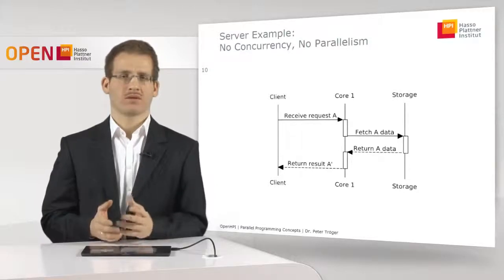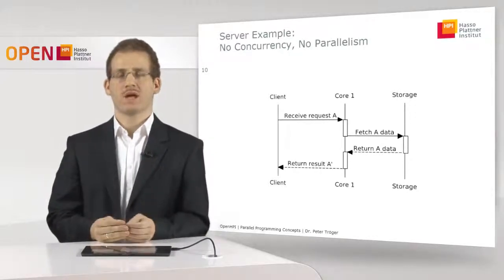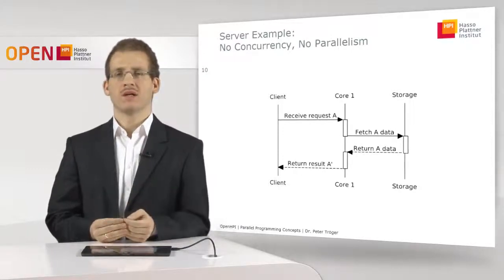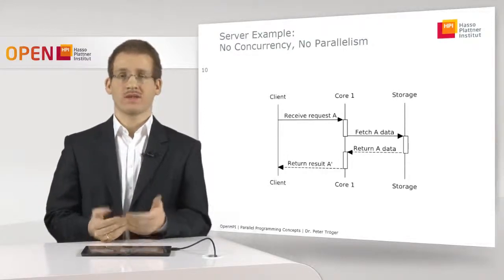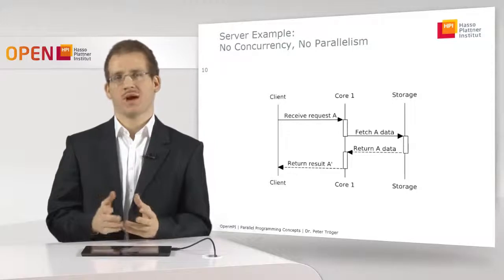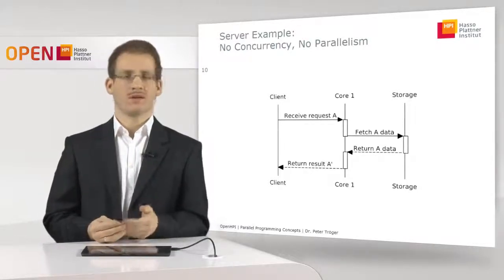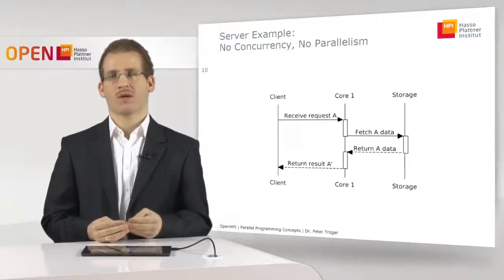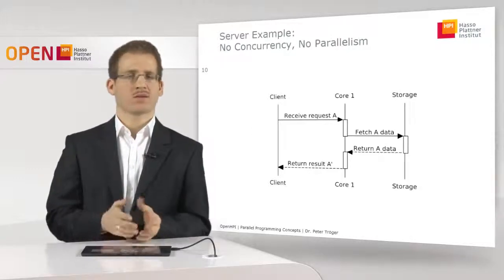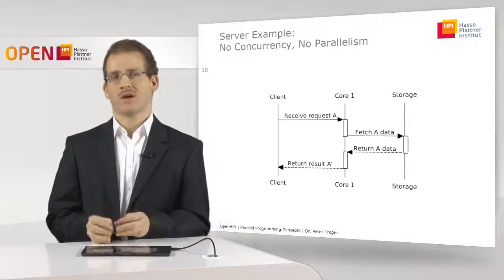Let's take a simple example to strengthen this understanding: a server system. We have a server computer with one or multiple cores and some storage, and clients sending requests to the server. The first example is the case without concurrency and without parallelism. The client sends a request A, which is received by one of the cores. The server performs some computation — for example, parsing the input data from the network — then makes a request to storage to fetch the necessary data. This takes some time. An answer comes back from storage, the core formulates a network response, and sends it back to the client. A practical example would be a web server or database server. In the picture you can see a clear distinction between the phase of computation and the phase of I/O on the storage system — during the I/O phase, the core has nothing to do.